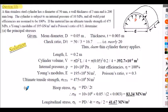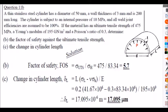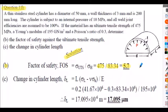Question 11b solution: hoop stress σ_h = pd/2t = 83.4 MPa. Longitudinal stress σ_l = pd/4t = 41.7 MPa (half the hoop stress, as expected with no weld efficiency factors). Original volume calculated for later use. Note: the d/t ratio is slightly less than 20 (50/3 ≈ 16.7) but thin cylinder theory is still reasonably applicable. Factor of safety = UTS / σ_h = 475 / 83.4 = 5.7.